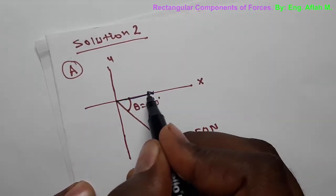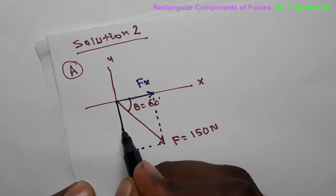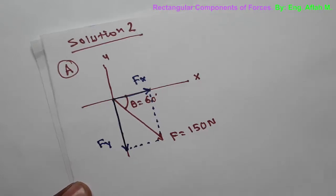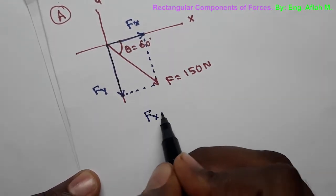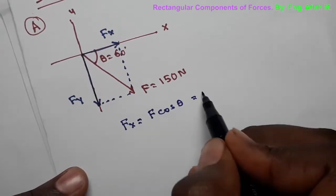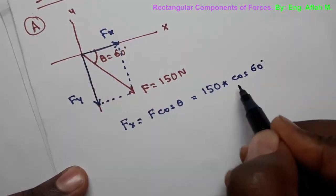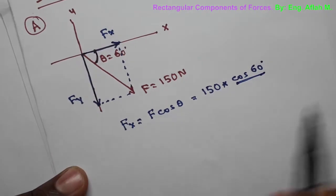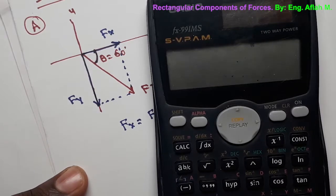Extending a line gives us the X component FX, and drawing a horizontal line gives us the Y component FY. Using the previously derived formula, FX equals F times cosine of theta. Since the angle is given with the X-axis: FX equals 150 times cosine of 60 degrees, which equals 75 Newtons.